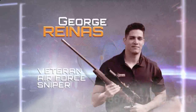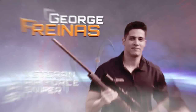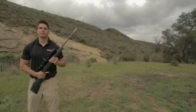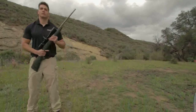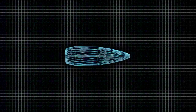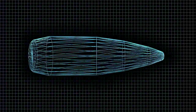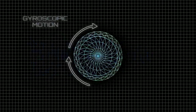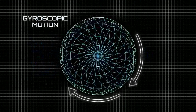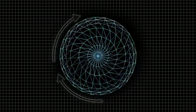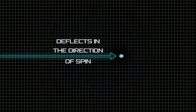Veteran Air Force sniper and long-range expert George Rinas helps us demonstrate. Spin drift is the deflection caused by the gyroscopic motion of the bullet. This motion, aside from keeping the bullet stable and pointed forward, deflects in the direction of spin.